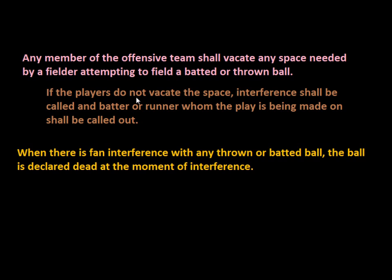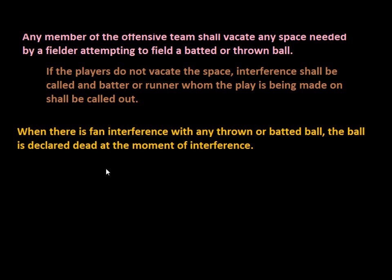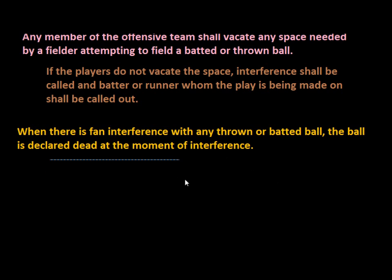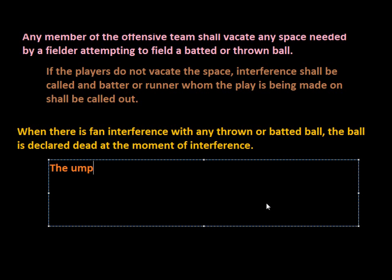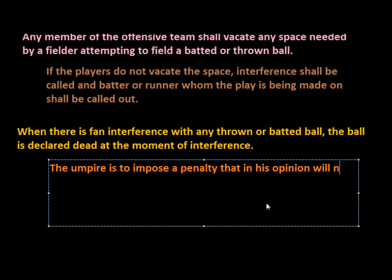Rather than simply stating that the runner is out — because with player interference the offensive team obviously has a reason to deter the defense, whereas fans may not — the rulebook says the umpire shall impose such a penalty as in his opinion nullifies the interference. So this is a judgment call the umpire is making to nullify the act of interference.